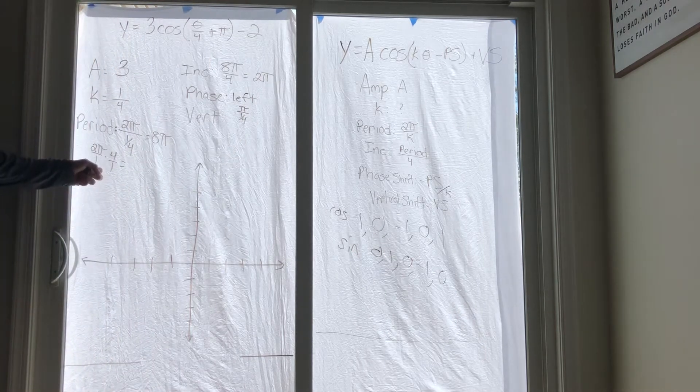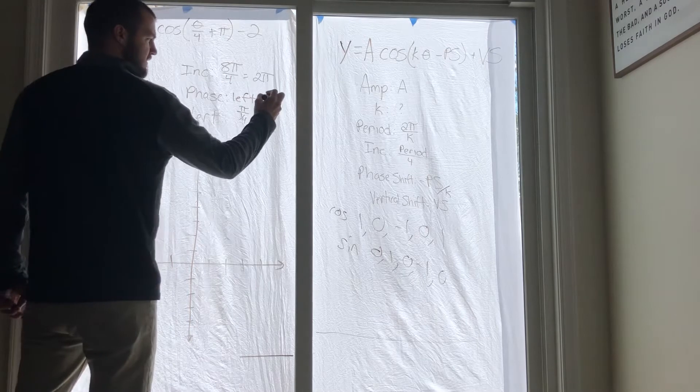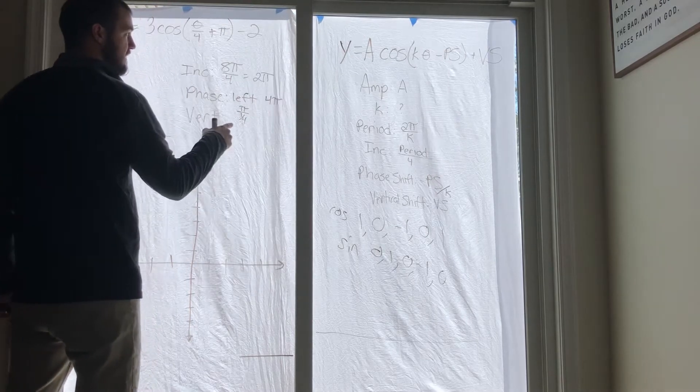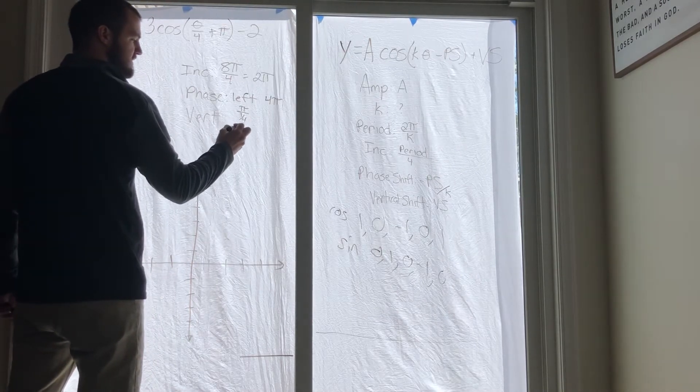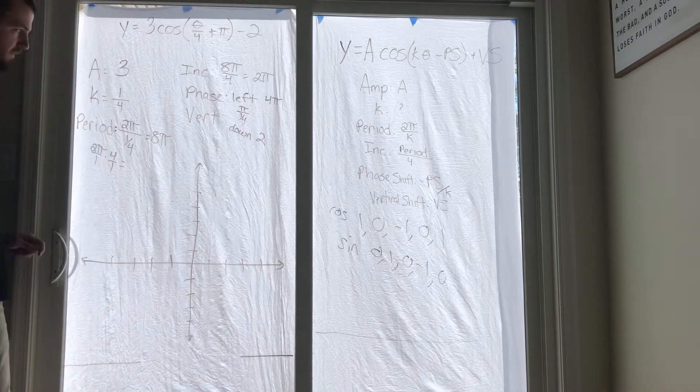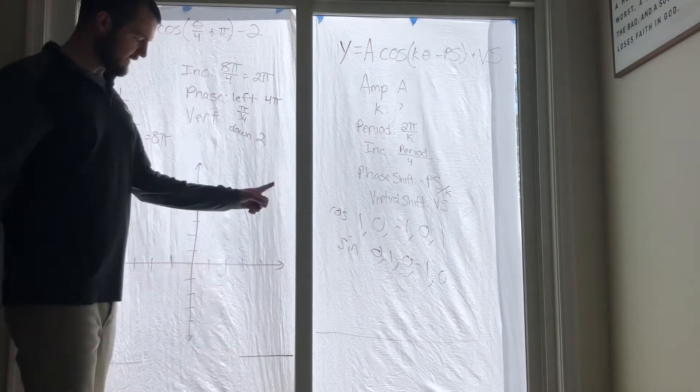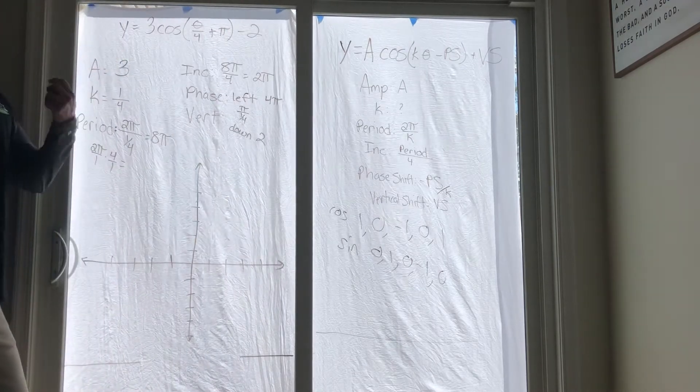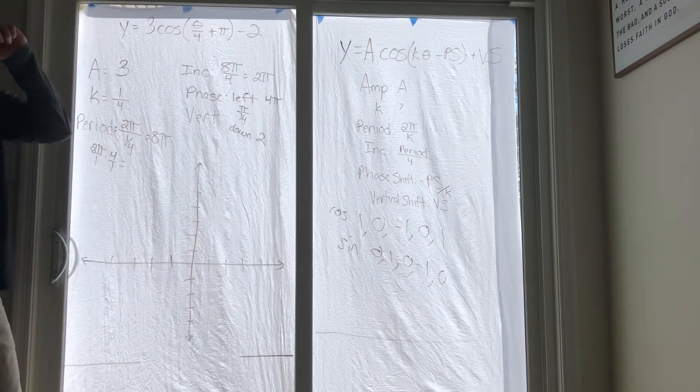And then your vertical shift is down 2. You can write minus 2, doesn't matter. Now label it - this is super important, make sure you do it right. Our increments are 2π, so that's what we're going to count by each time. Each one of these spaces represents 2π.